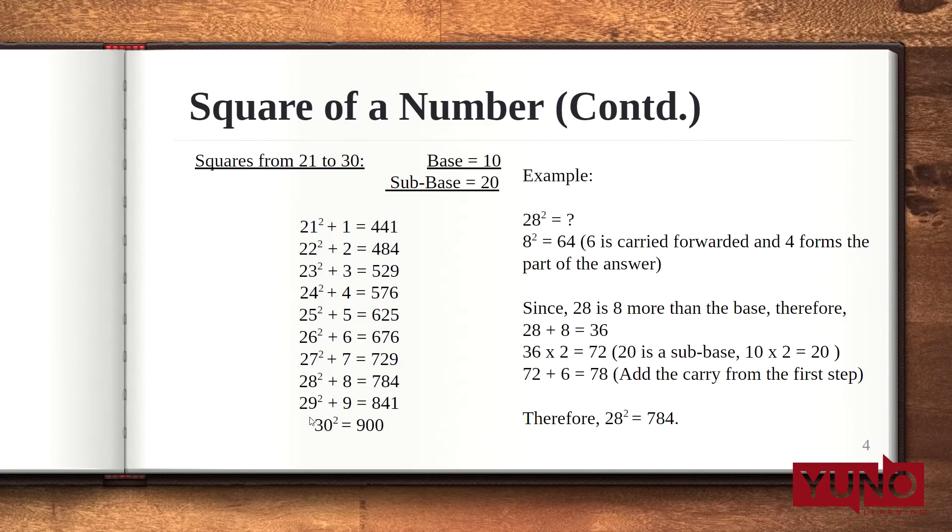Next comes the method where we have sub bases involved. In this case, we will be calculating squares from 21 to 30. Here our base will be 10, and 20 is considered as a sub base. In such a case, the first step is write the square of the numbers that are more than the sub base at the ones place. So, this step remains same.